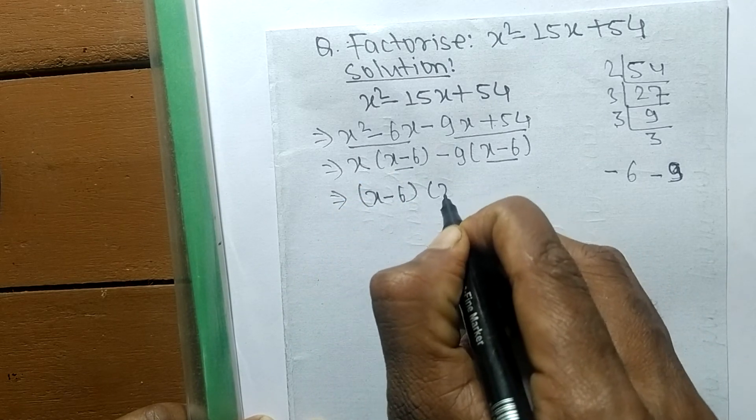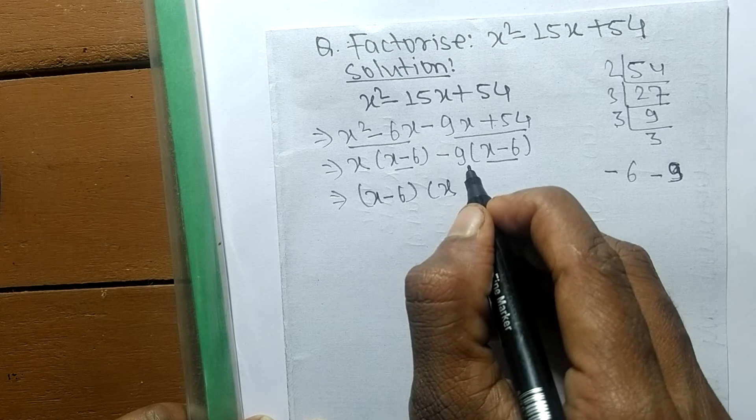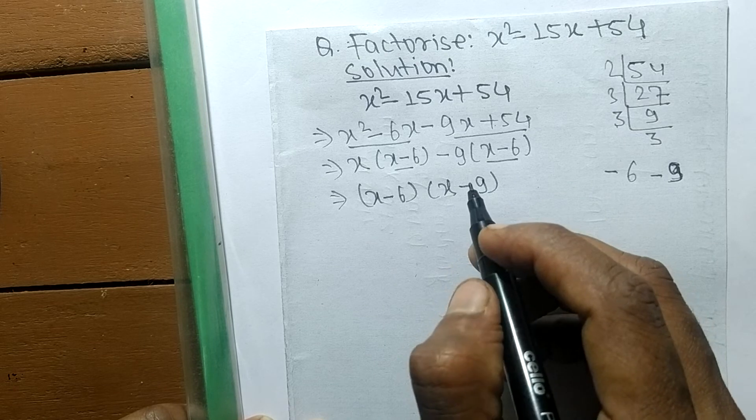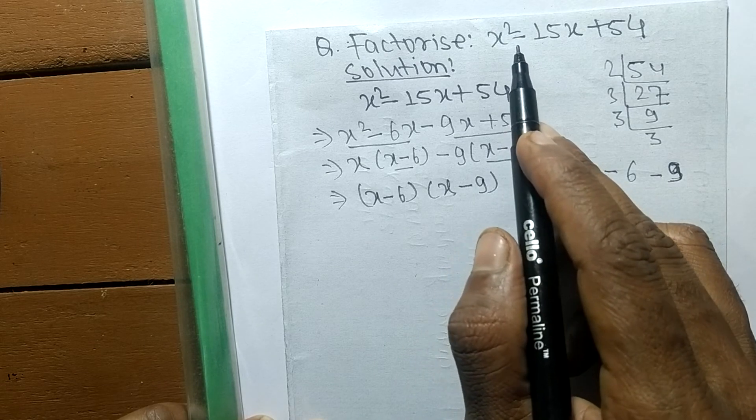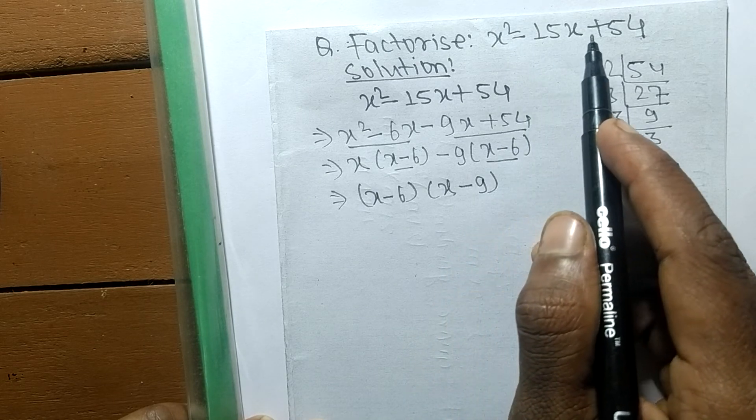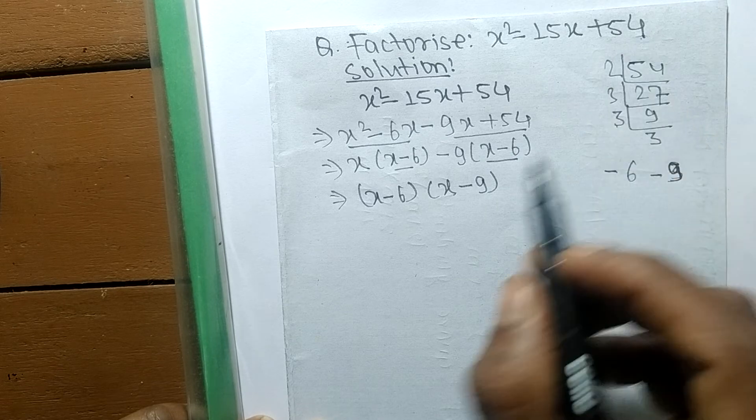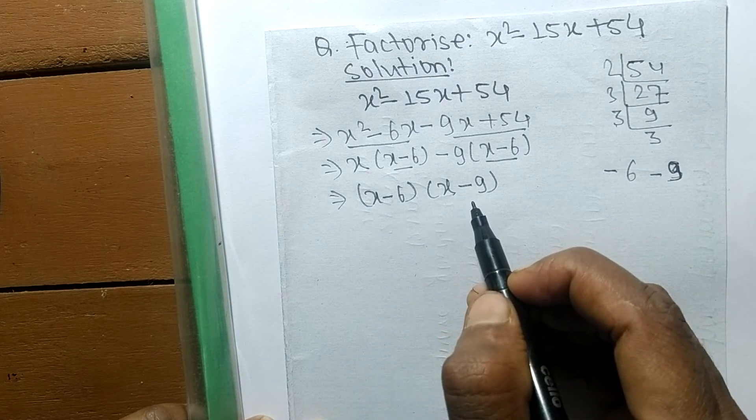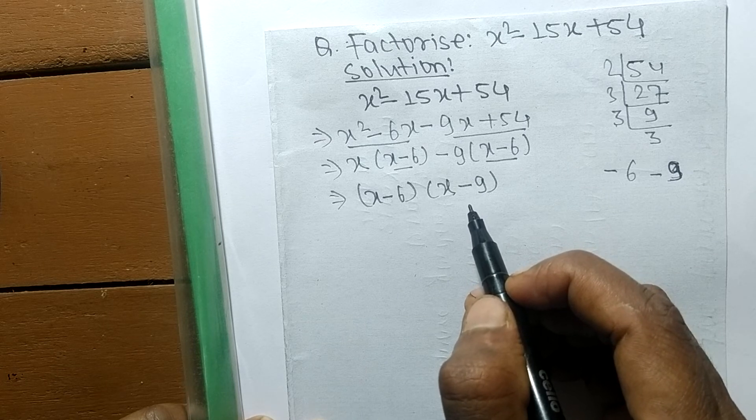In the first, the remaining is x, and in the second, the remaining is minus 9. So the factors of x² - 15x + 54 are (x - 6) and (x - 9).